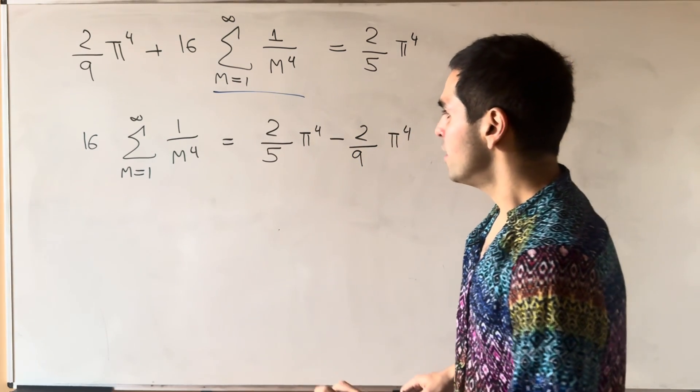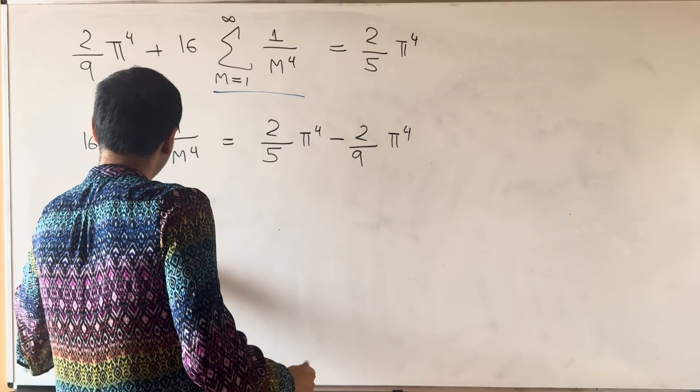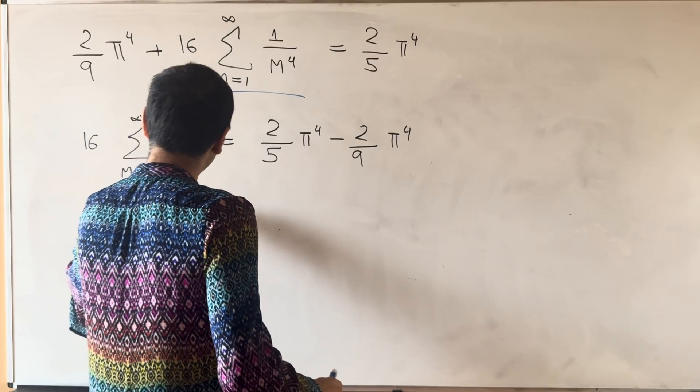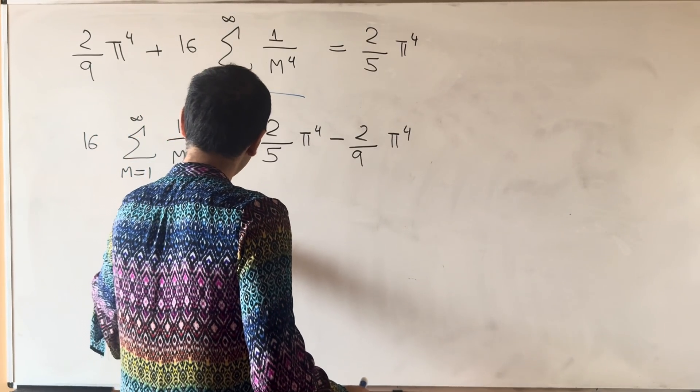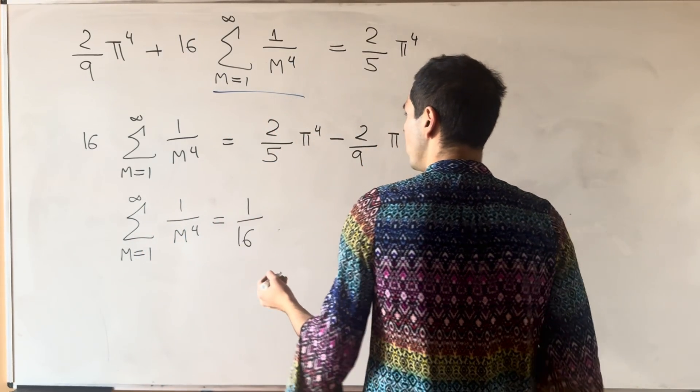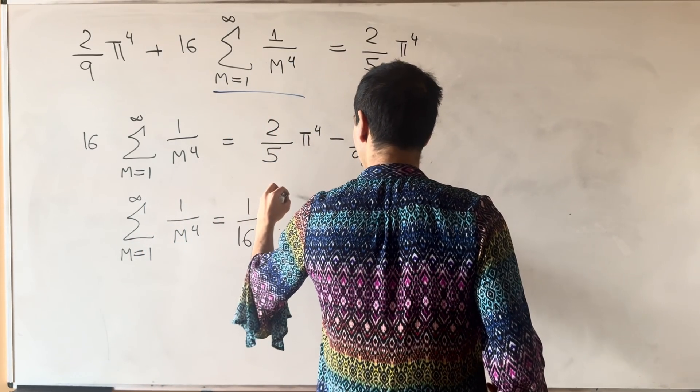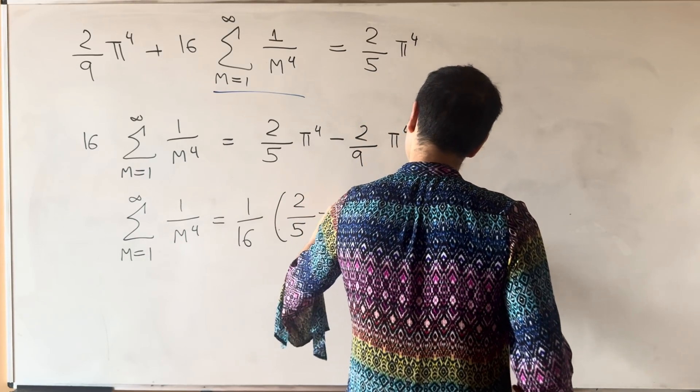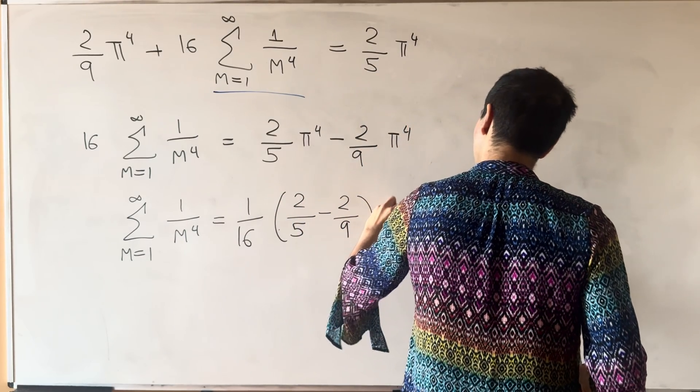And then what we now again end up getting is sum from 1 to infinity 1 over m to the 4th is 1 over 16 and then we get 2 fifths minus 2 ninths pi to the 4th.